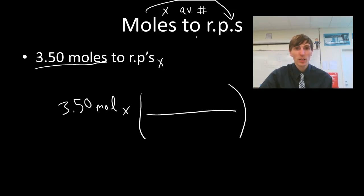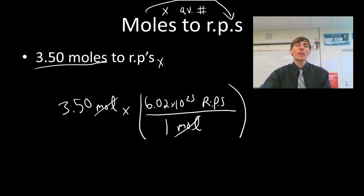So 3.5 moles times, we're going to use Avogadro's number. In every mole, you must be in my guide, there are 6.02 times 10 to the 23rd things, representative particles. So if my representative particle is that formula unit of mercury 1 hydroxide from the last problem, my representative particle is going to be a formula unit. If it's just an element, it's going to be an atom.